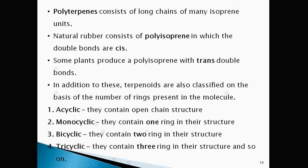For example, natural rubber is an example for polyisoprene which consists of double bonds in cis manner. Some polyisoprene which are naturally occurring contain double bonds in trans manner.